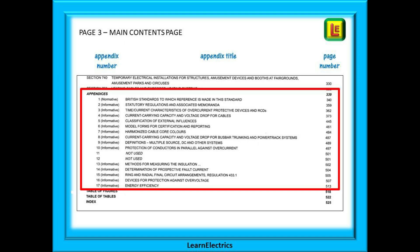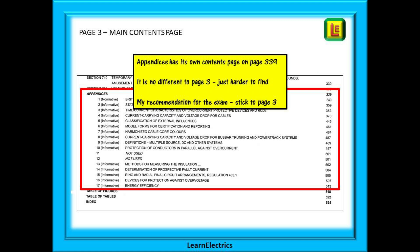I recommend that you always use page three as your starting point for any question. Towards the bottom of page three you will find the appendix numbers, their titles and their page numbers. The appendices also have their own contents page but they are exactly the same as page three, and as it is harder to find than page three I never use page 339. It is much quicker to go straight to page three.